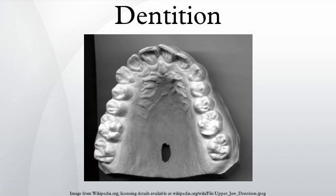Vertebrate dentition originated from a folding in of the placoderm's armor, evolving into the familiar condition of living reptiles, amphibians, and fish — a long row of pointed or sharp-sided, undifferentiated teeth that are completely replaceable. The mammalian pattern is significantly different.